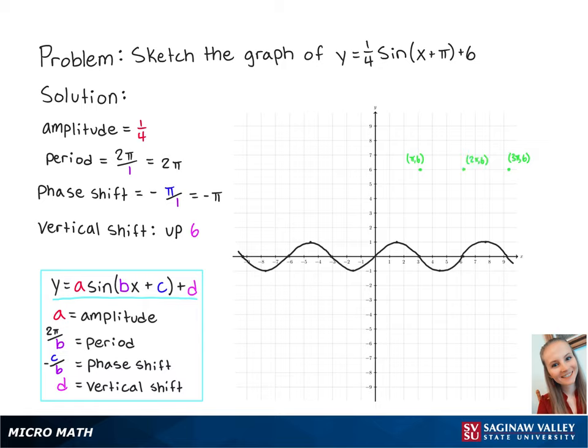This means that the midpoint is at 2 pi 6. The first high point is halfway between the starting point and the midpoint at 3 pi over 2, 25 fourths. The first low point is halfway between the midpoint and the last point at 5 pi over 2, 23 fourths.